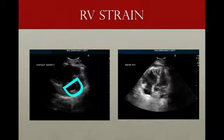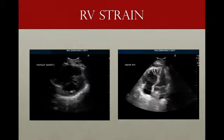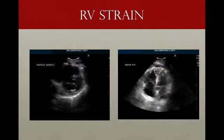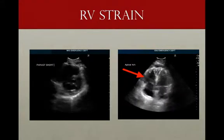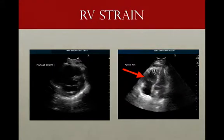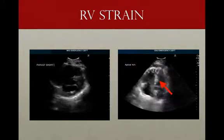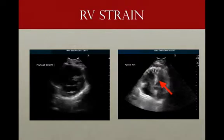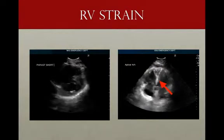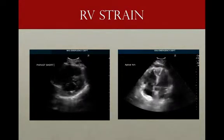In the image on the right, we see the dilated right ventricle with a hypokinetic free wall. We can also see paradoxical septal motion — the interventricular septum bowing in toward the left ventricle during systole.